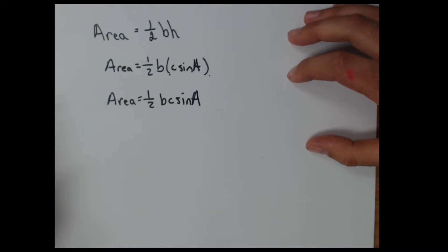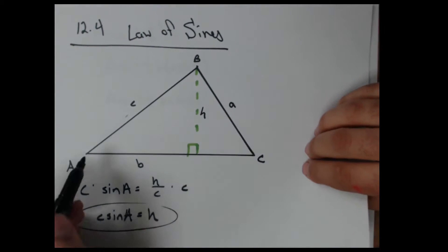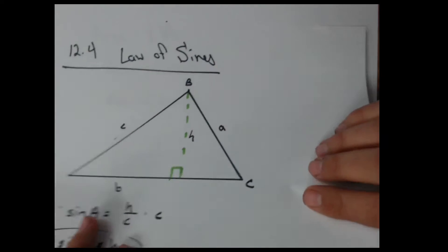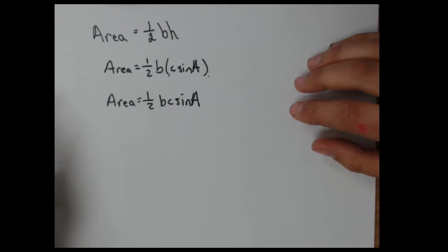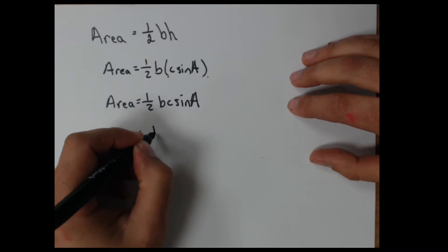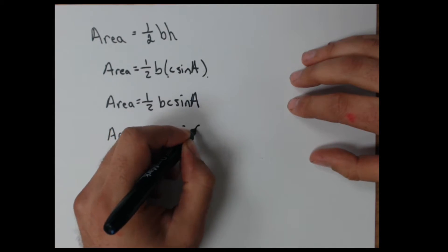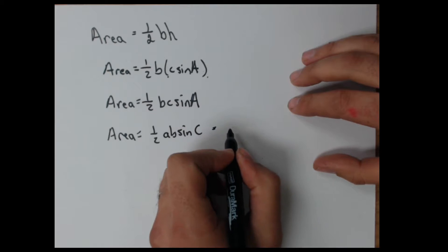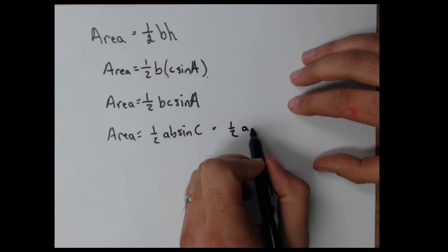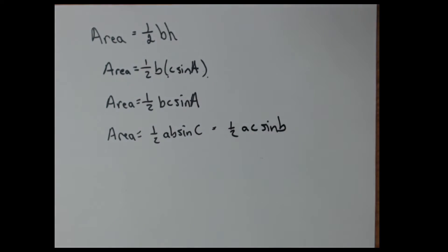And by a similar rule, if I just change up the angle I'm using, instead of using angle A, if I use angle B, I can change the order of these. And all of this switches around, so I also have my area equaling one half A, B sine C, which is the same as one half A, C sine B. All of those statements are true, and that's the nice thing about that. I can use that now to find out the area of kind of a funky triangle.